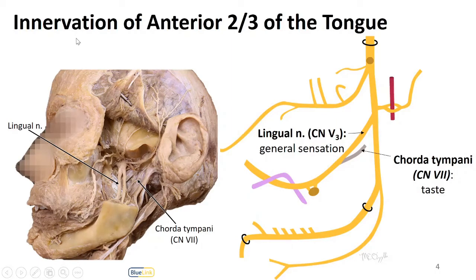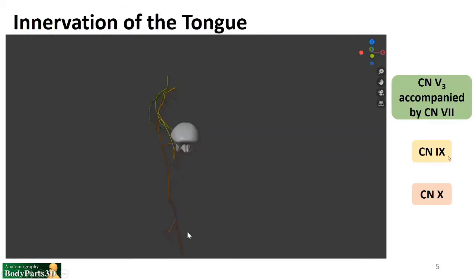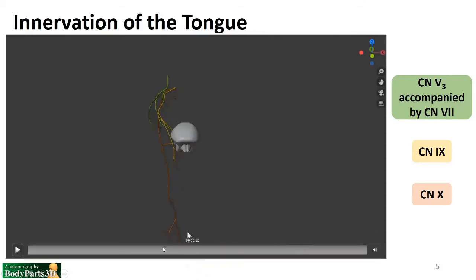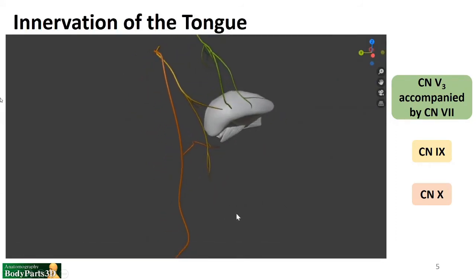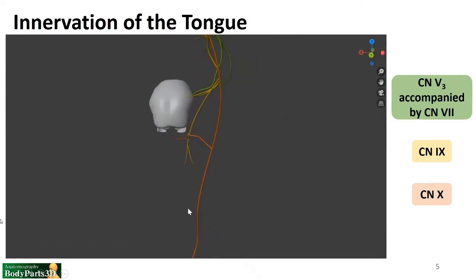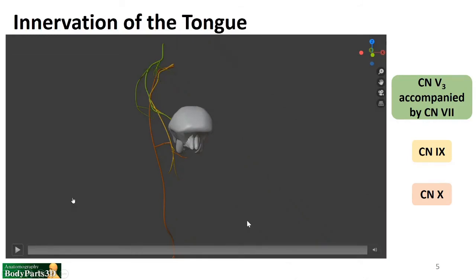In the infratemporal fossa, we see the lingual nerve joined by the chorda tympani to carry back sensation — both general and taste — from the anterior two-thirds of the tongue. In this image we can find lingual nerve running here, and we can follow chorda tympani as it passes through the infratemporal fossa to reach the lingual nerve. In the video, V3 with chorda tympani is shown in green, glossopharyngeal in yellow. We also see where cranial nerves 9 and 10 exit the jugular foramen together, and how that branch of vagus supplies the larynx but can send fibers up to the posterior tongue.